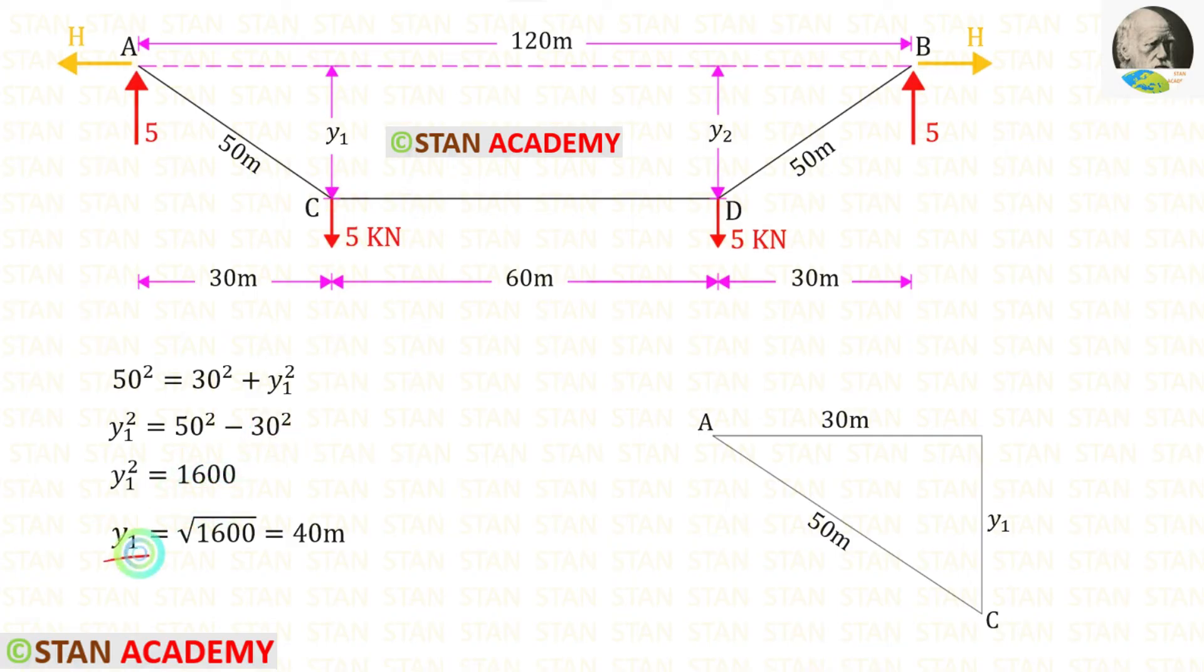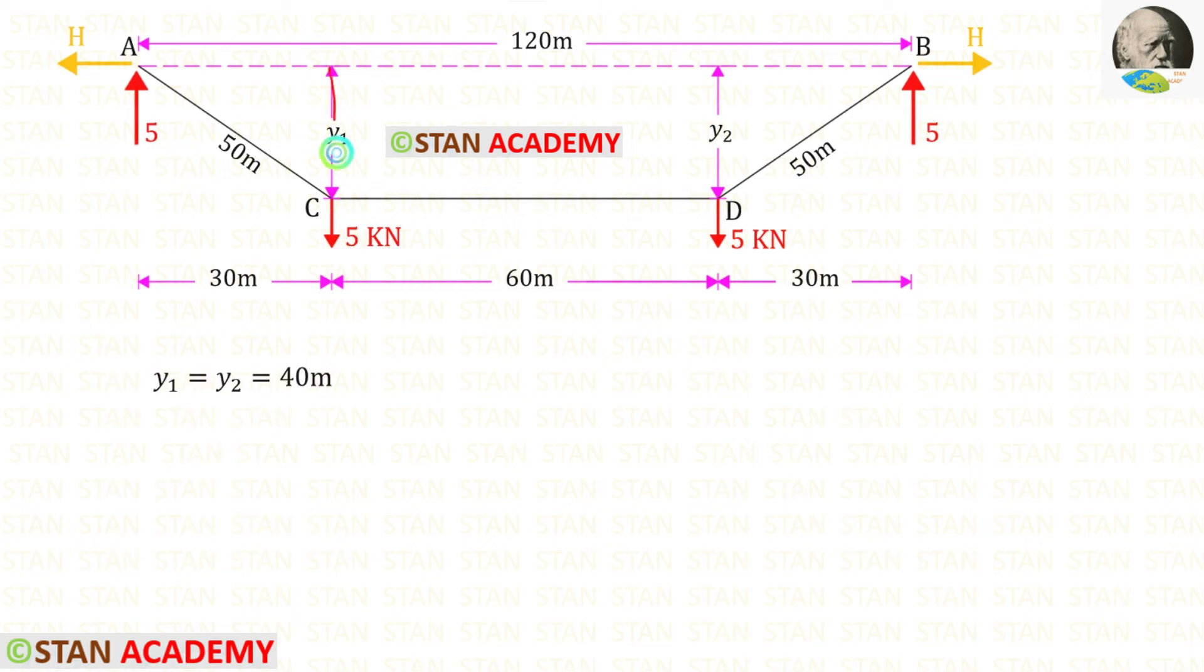To find y1, we have to take the root of this. When we do that, we will get 40 meters. We know that y1 and y2 are the same, so y1 and y2 will be 40 meters.